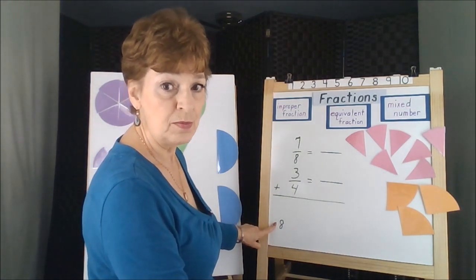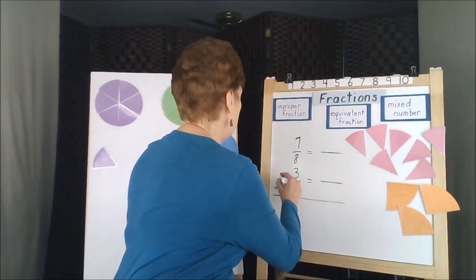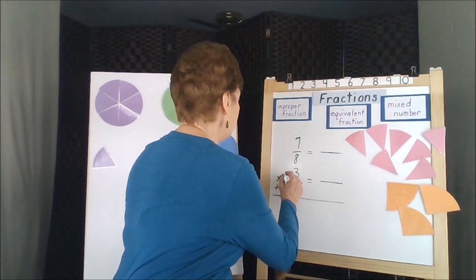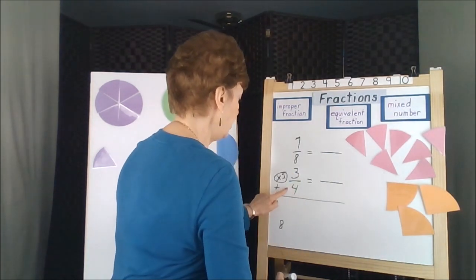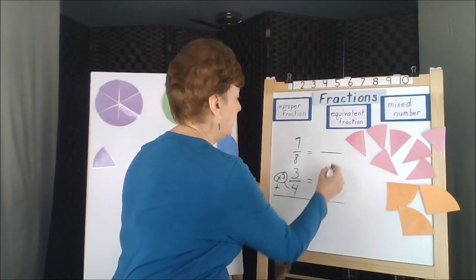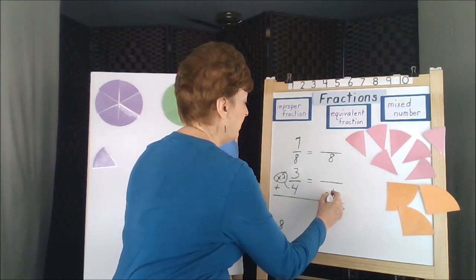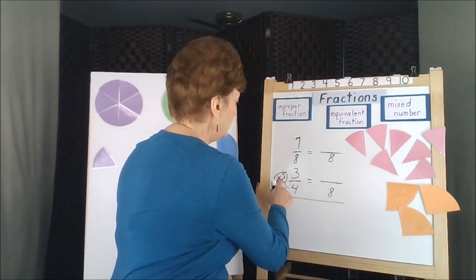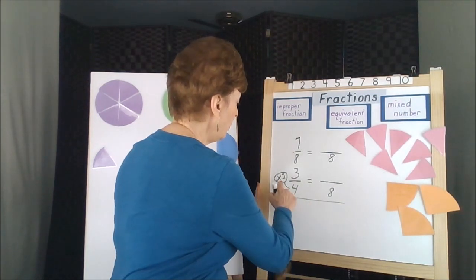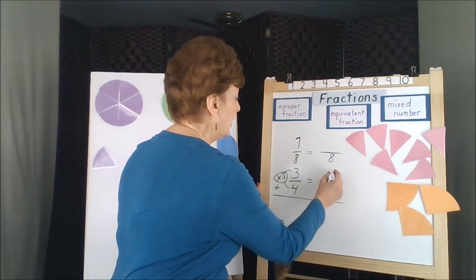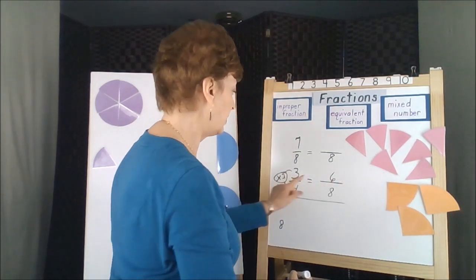Yes. You can multiply times two. So if we multiply this fraction by two, we will get our common denominators of eight. Two times four is eight. So two times three is six. And that's the equivalent fraction.